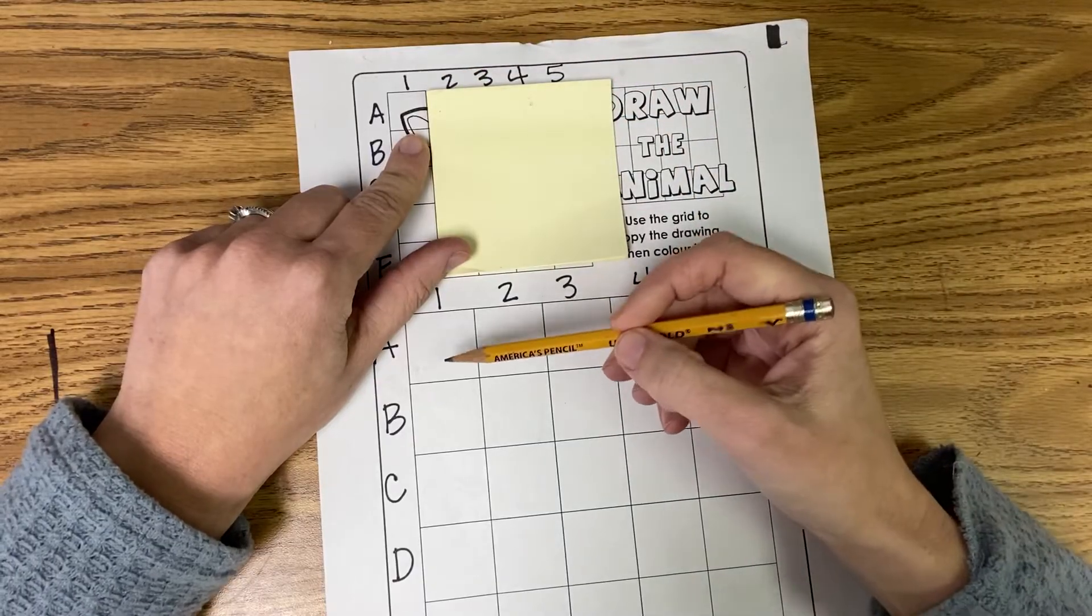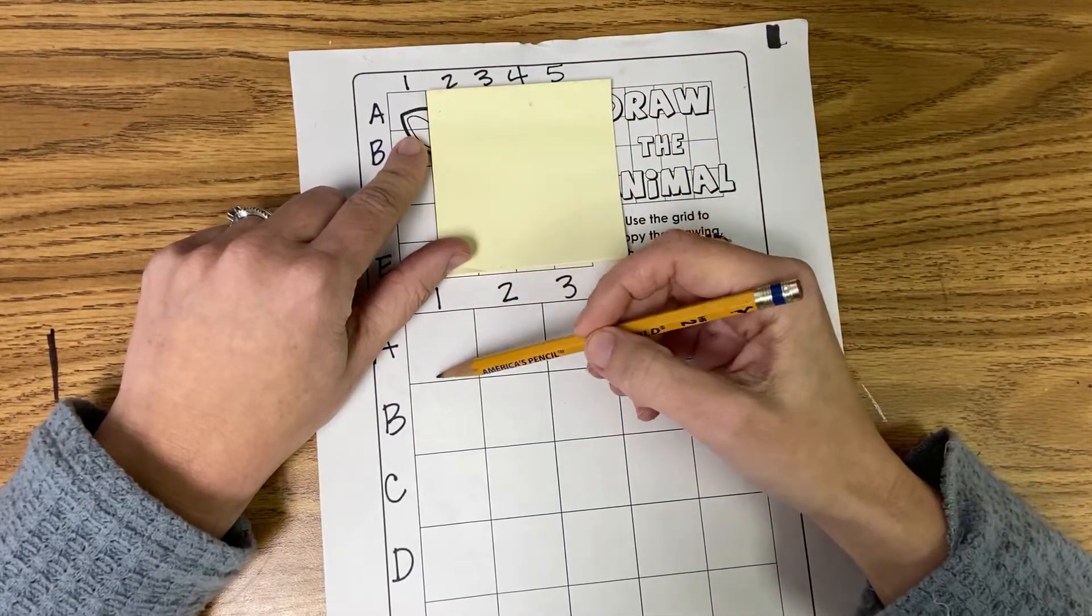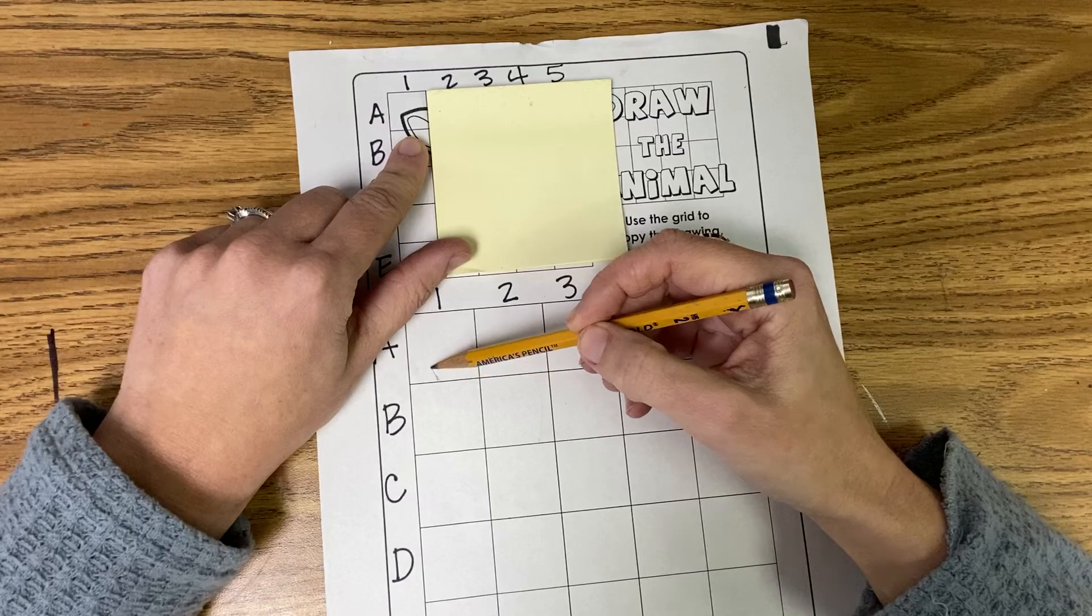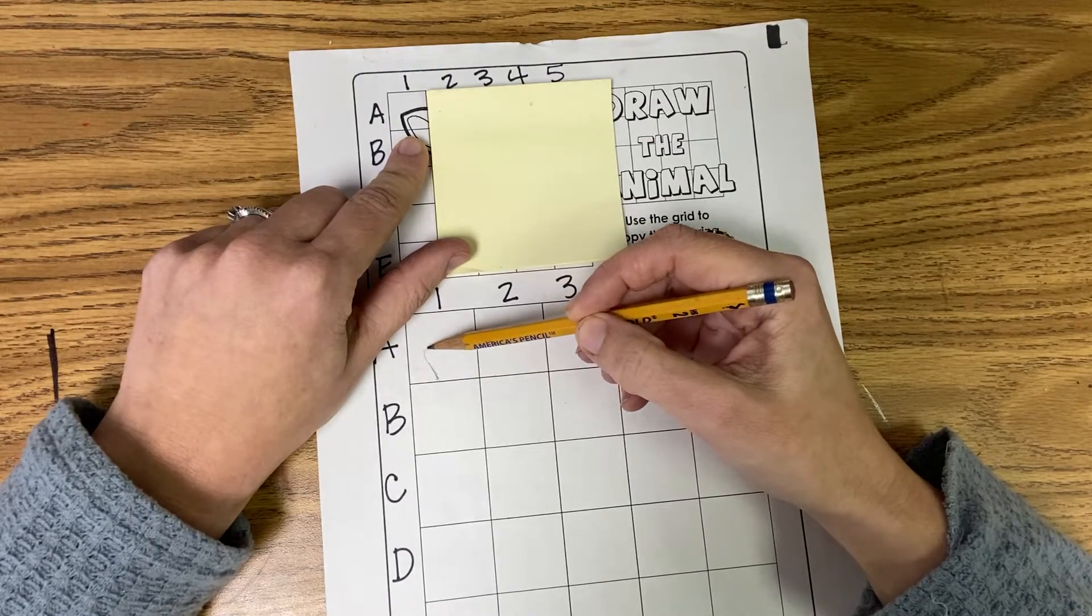You only want to draw what is in square A1. Alright, so if I'm coming down here and I'm looking at A1, I can see that this ear, at this point, I don't even know it's an ear. I just see lines.